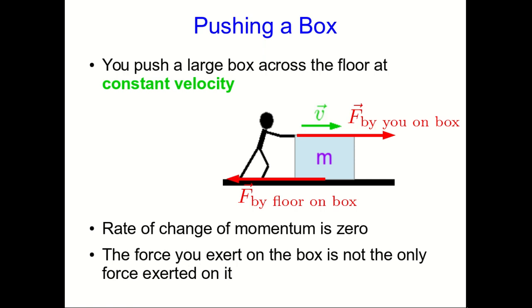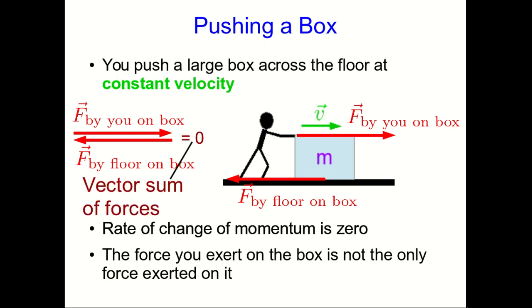The fact that the box is moving at constant velocity tells us that the strength of these two forces, the one that you're exerting on the box and the one that the floor is exerting on the box, must be equal. And so the vector sum of the forces is zero, and that's why the rate of change of the momentum is zero.